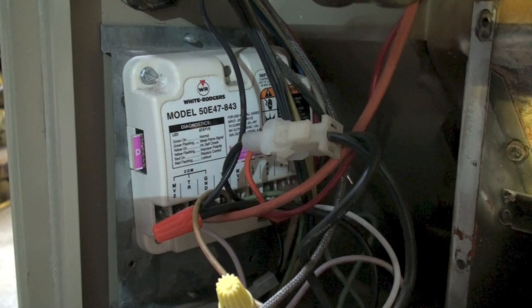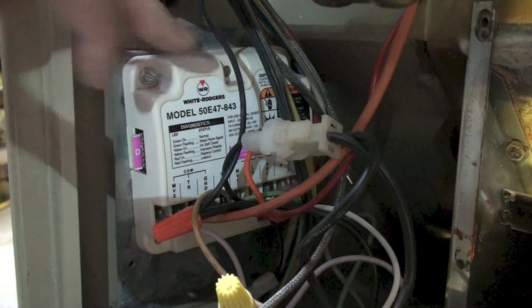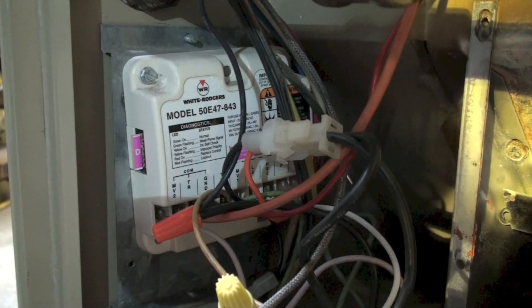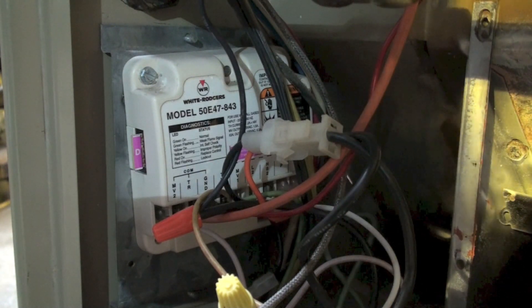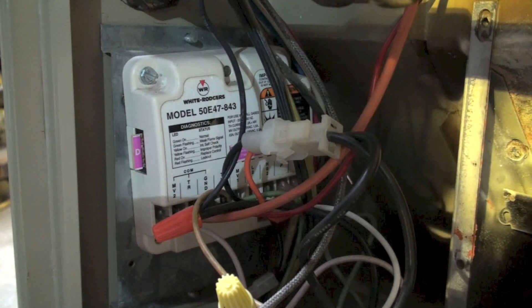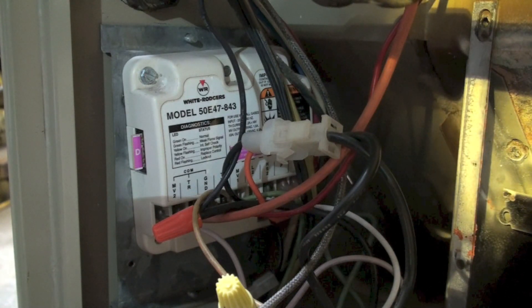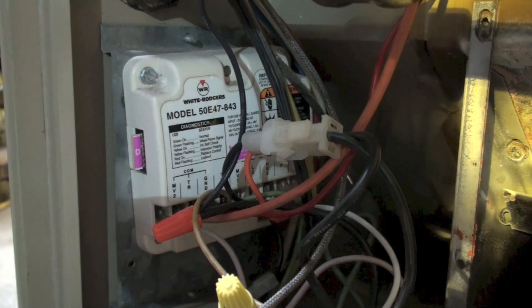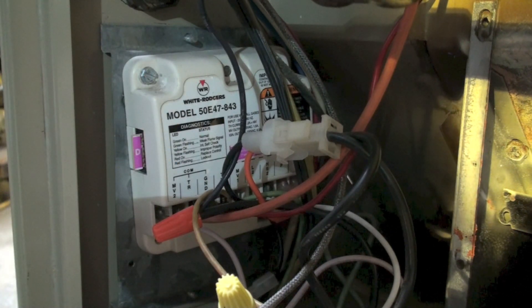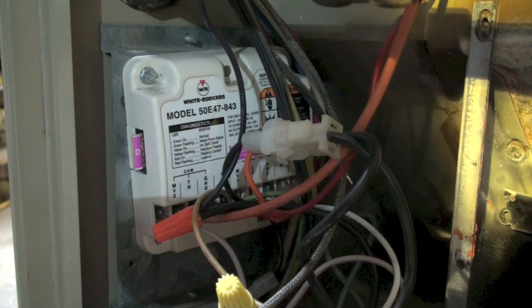However, when I look at my control, there's no light at all. And if I put a meter on the control for this thermostat, also no power. So the ignition module does not appear to be showing any power.